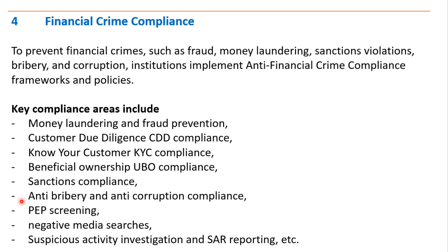Further, bribery and corruption is an area for which institutions must develop appropriate policies and procedures to prevent such cases. Politically exposed person (PEP) screening before opening accounts and during investigations is also one of the key compliance areas of financial crime compliance. Additionally, the performance of adverse media searches, or negative media searches, especially in the case of high-risk customers, is also a key compliance area.